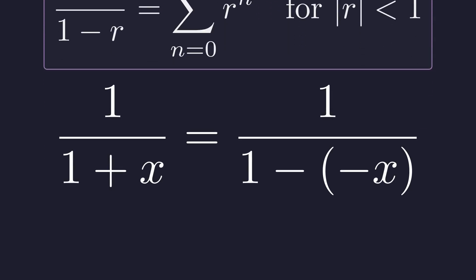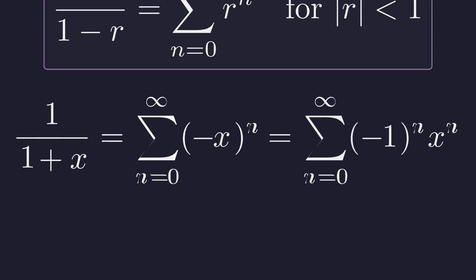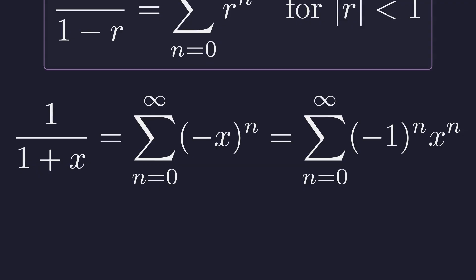1 over 1 plus x is the same as 1 over 1 minus negative x. In the formula, our r is now negative x. Applying the formula, we get the sum of negative 1 to the power of n times x to the power of n. This is valid since our integral goes from 0 to 1.